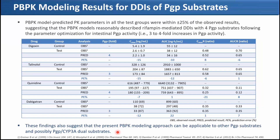Looking at PK parameter estimation, when we assumed 3- to 4-fold P-gp induction, we reasonably predicted Cmax, AUC, and Cmax/AUC ratios in the rifampin test group with prediction error less than 25% in all cases. This consistent fold induction across the four P-gp substrates suggests the present PBPK modeling approach may be applicable to other P-gp substrates and possibly P-gp/CYP3A dual substrates.